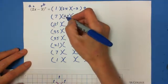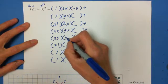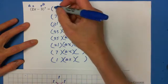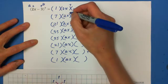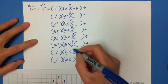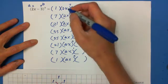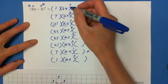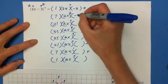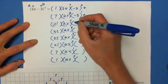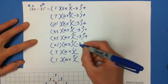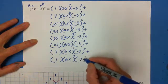The second component is 2x. The exponent of 2x descends from 7 down to 0: 7, 6, 5, 4, 3, 2, 1, 0. The third component is negative 3, with exponent in ascending order starting from 0: 0, 1, 2, 3, 4, 5, 6, 7.